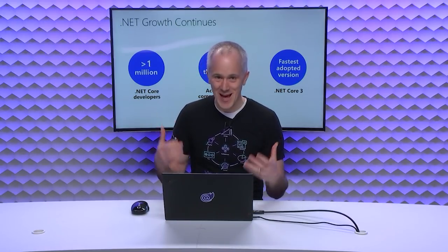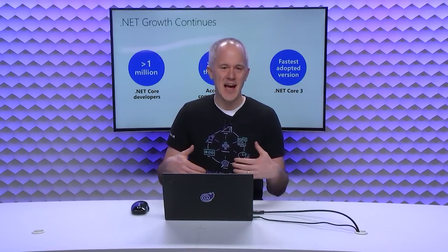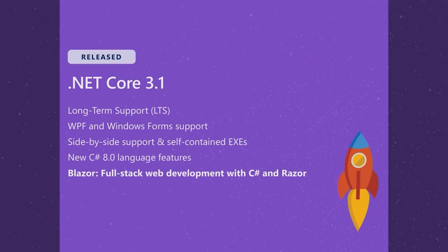We shipped the next major release, .NET Core 3, which is now the fastest adopted version of .NET Core ever. Last month we shipped .NET Core 3.1, a long-term support release including support for Windows desktop apps with Windows Forms or WPF, support for C# 8, and also support for building full-stack web apps with Blazor.